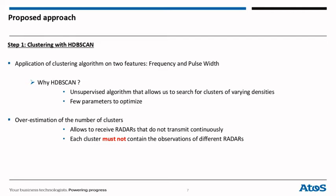Step one, clustering with HDB scan. We apply clustering algorithm on two features, frequency and pulse-width. Why we use HDB scan? Because it's an unsupervised algorithm that allows us to search for clusters of varying densities. Most of the parameters are auto-integrated by optimization strategy.